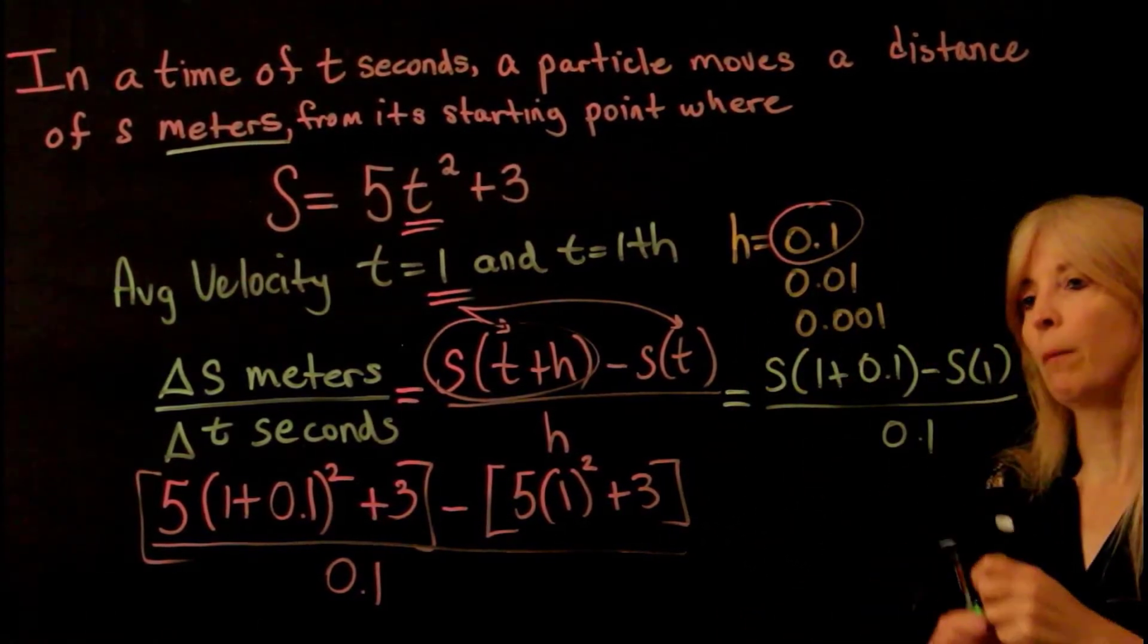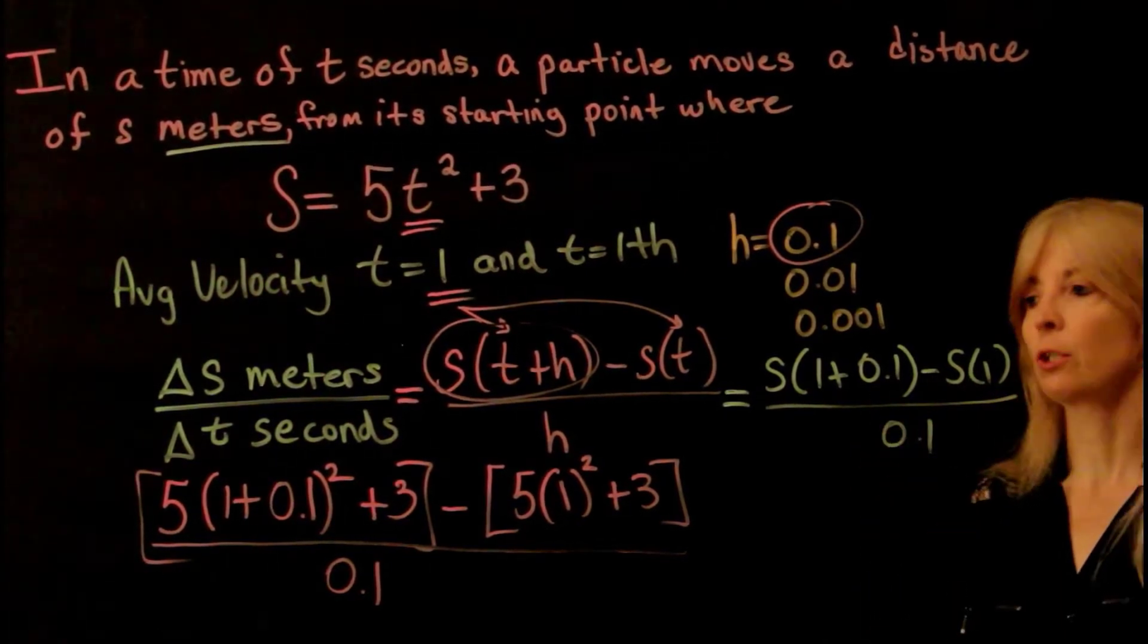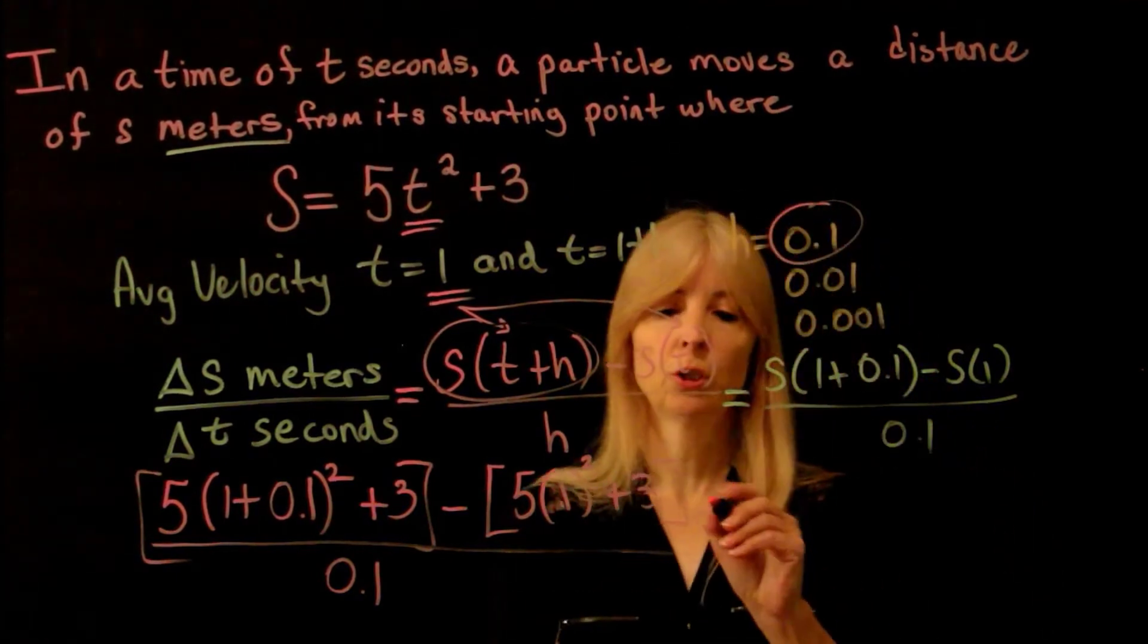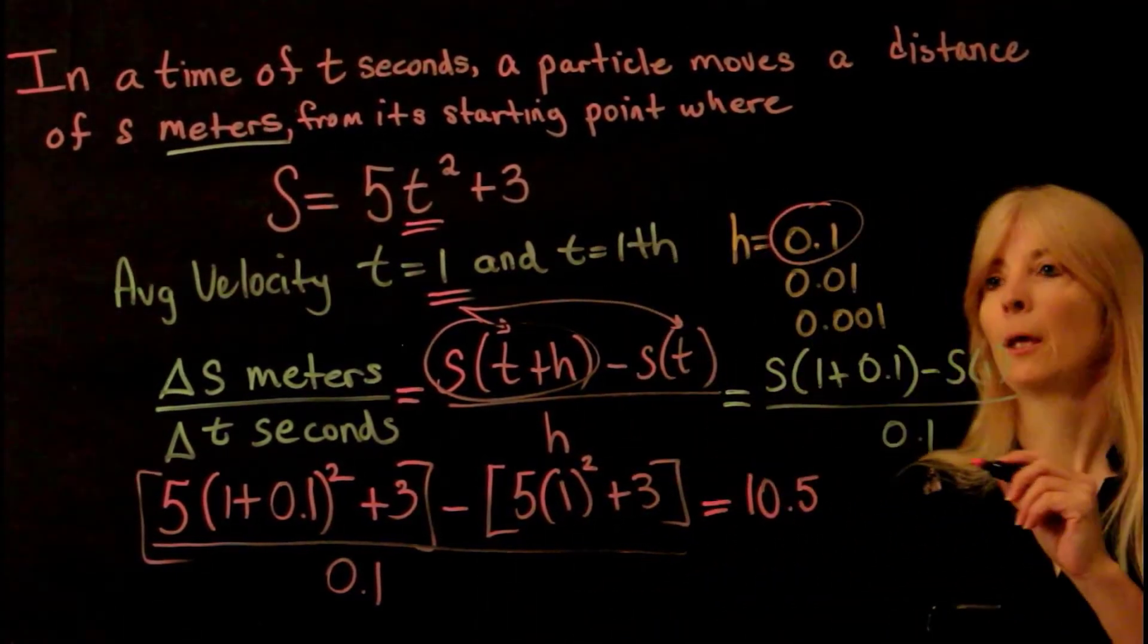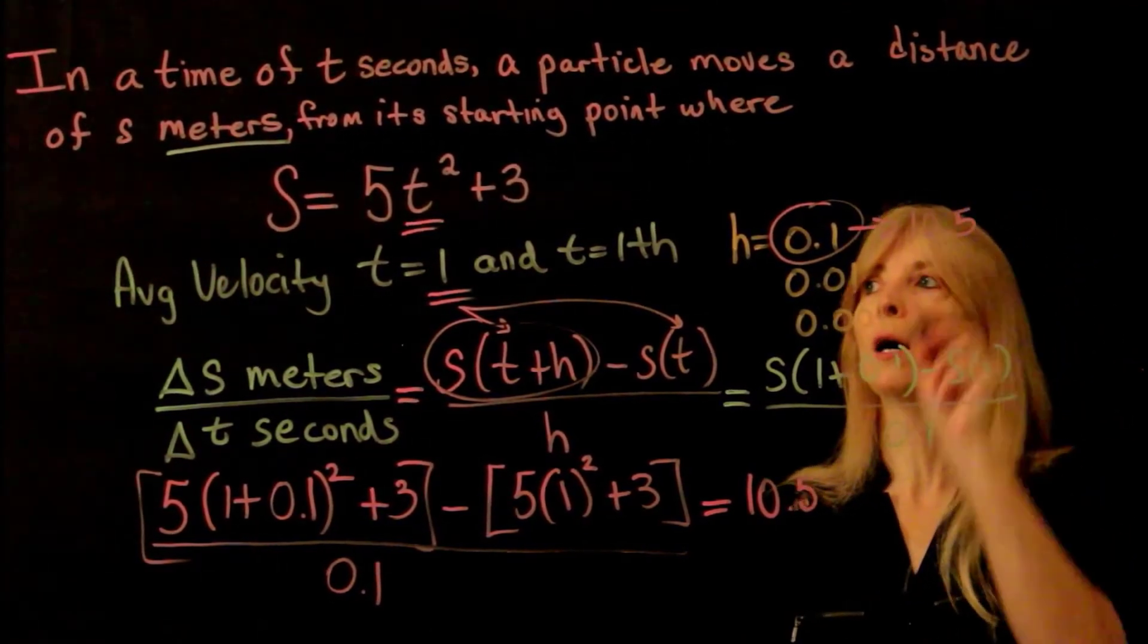And so now you can see what my t values are, and you can see what my h values are. And you throw all that in the calculator, and you should get 10.5. So this first one, I get 10.5.